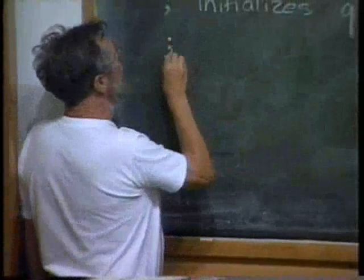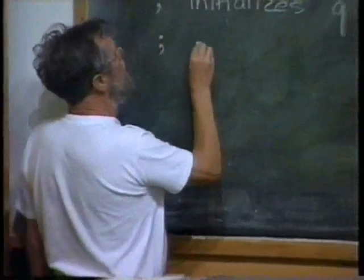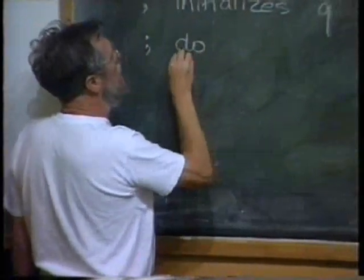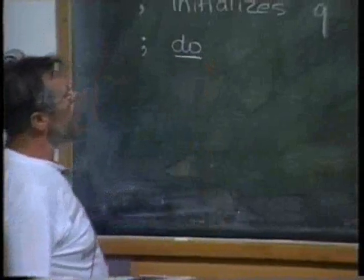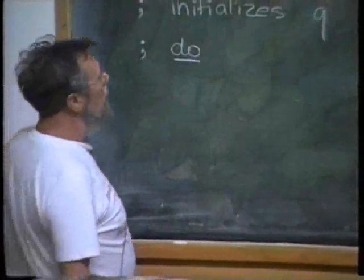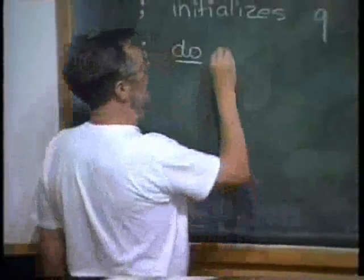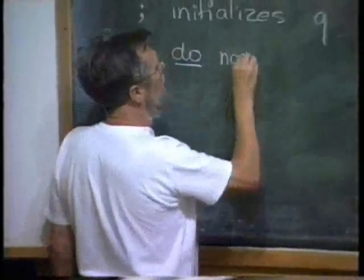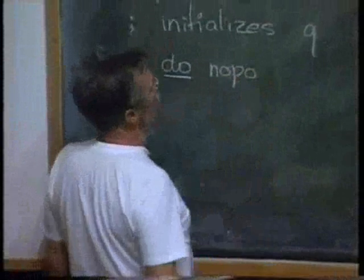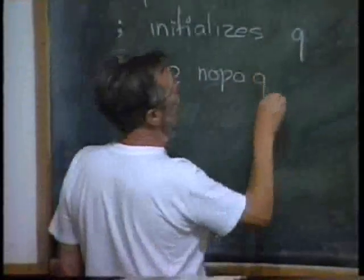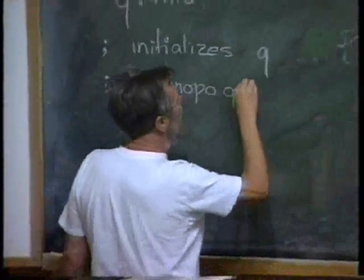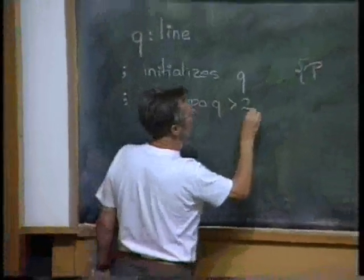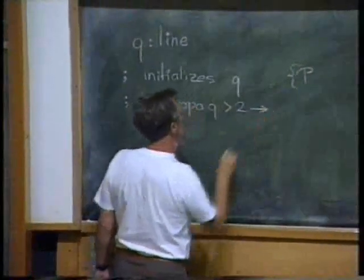Next is the test. We're now going to create a repetition. Whether this q is acceptable. Well, it is acceptable if the number of points on q equals two. However, if that number is larger than two, then something has to be done.